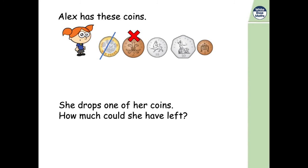She might have dropped the two pence coin. So then we've got the pound, add the 50 pence. I'm doing it in size order again. Add the 10 pence and add the one pence. One pound and 61.